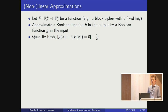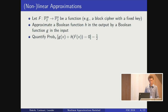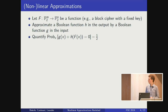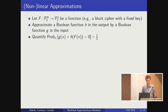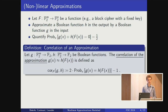As a third step, I will talk about how one could utilize probabilistic nonlinear approximations — those that do not hold with probability 1. Throughout this talk, we will consider a function f from m-bit to n-bit, for example, a block cipher with a fixed key.